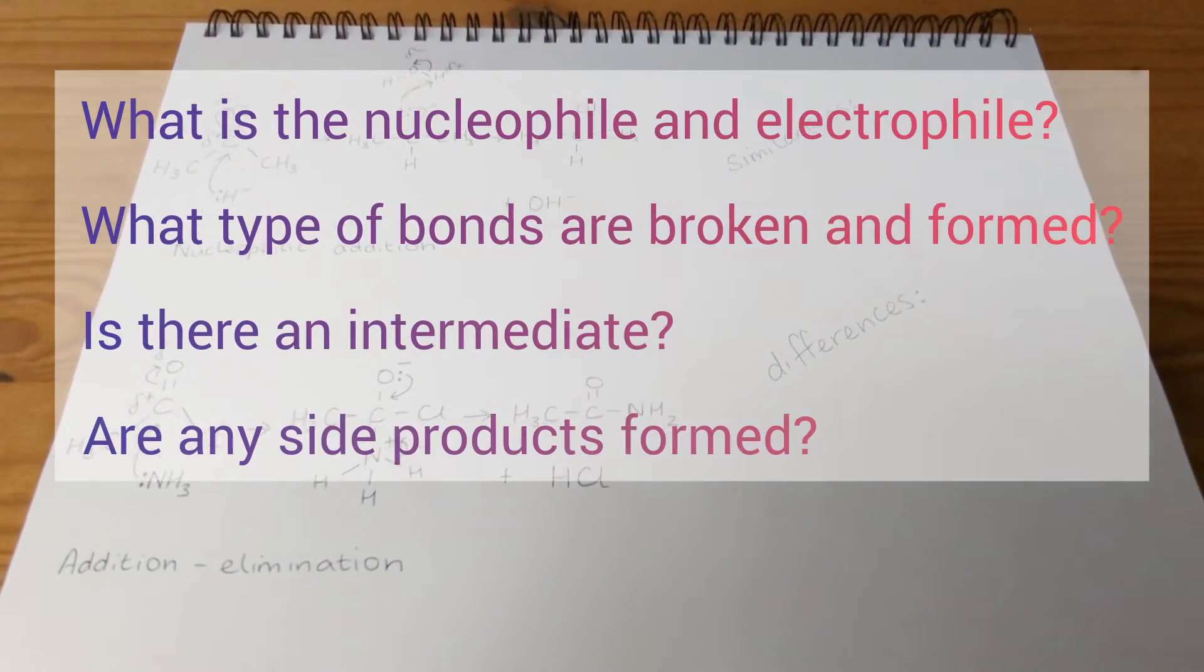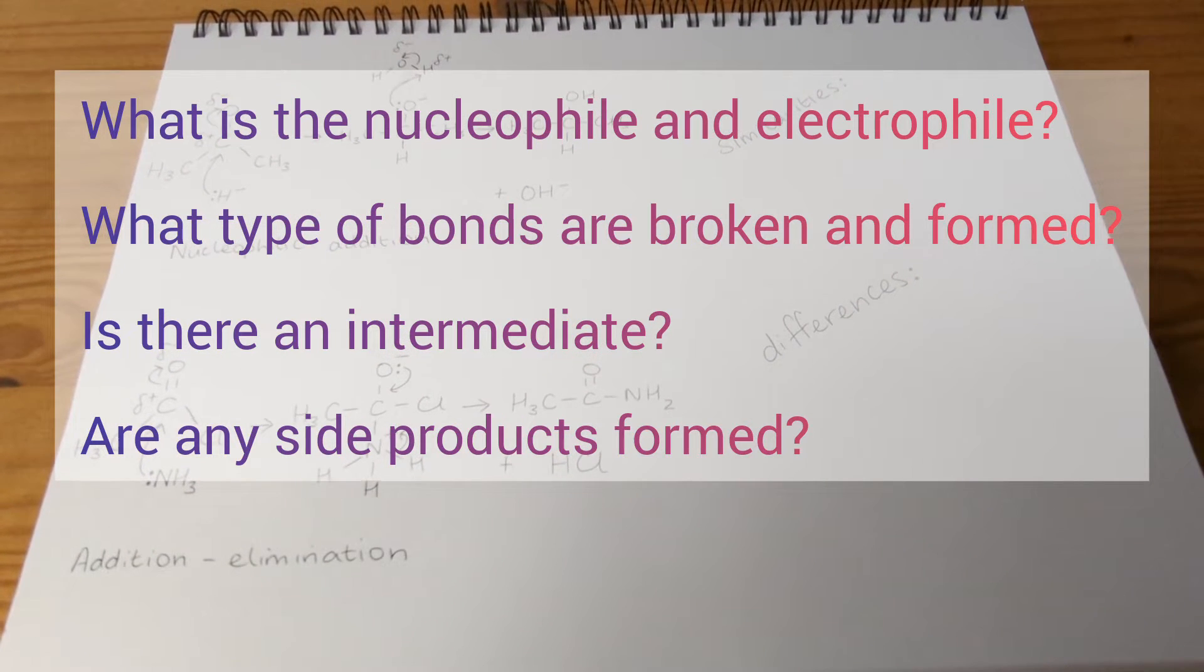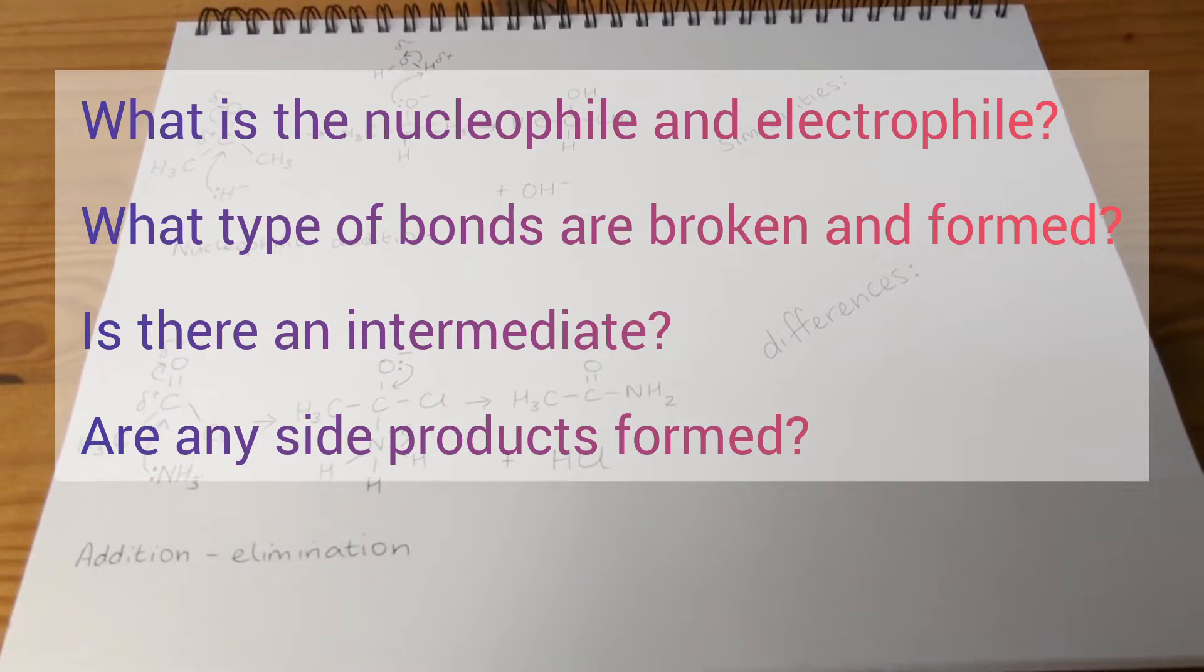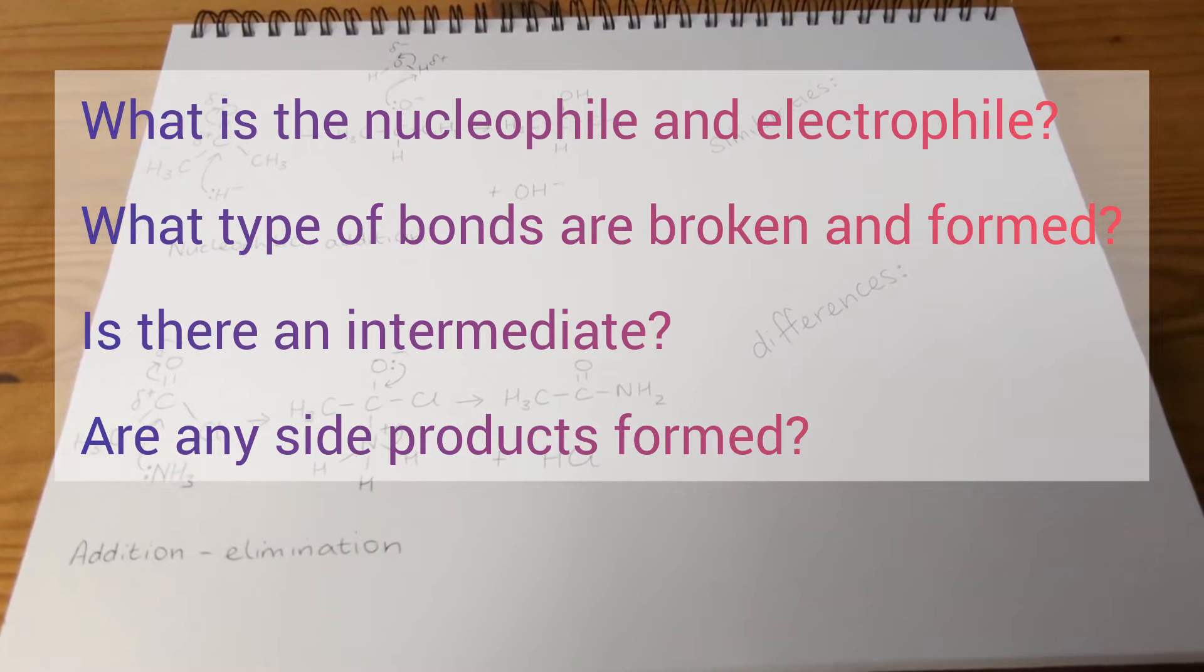Such as what is the nucleophile and electrophile? What are the type of bonds broken and formed? Is there an intermediate? And are there any side products?